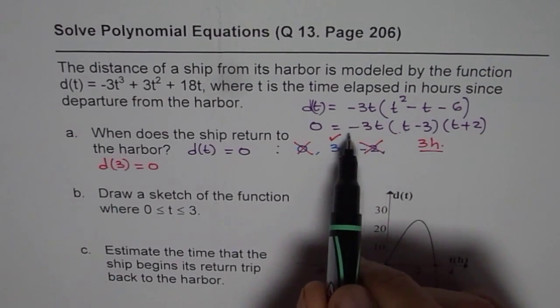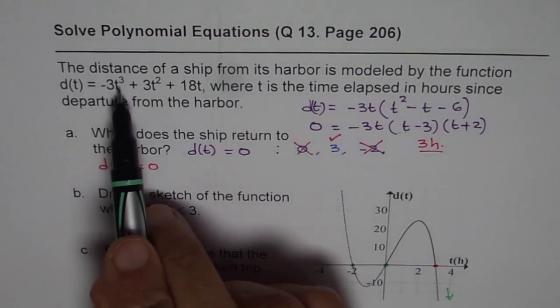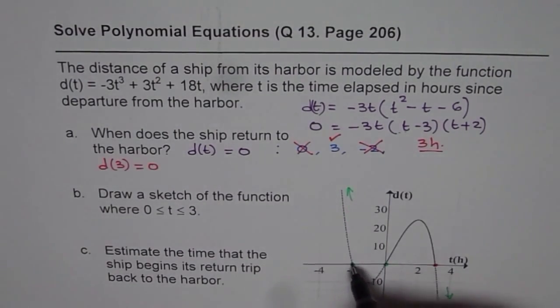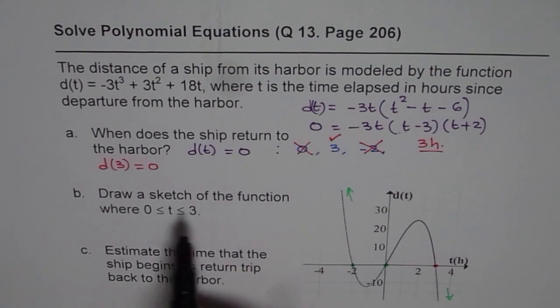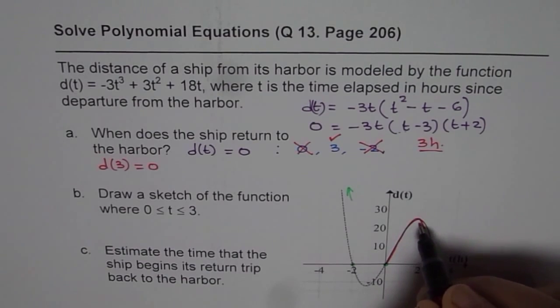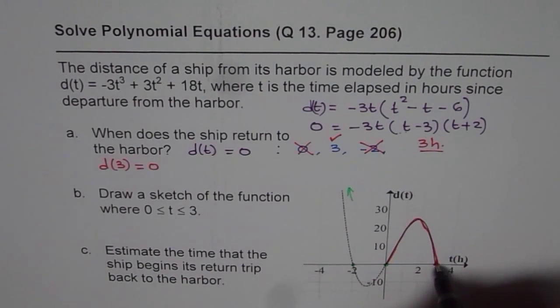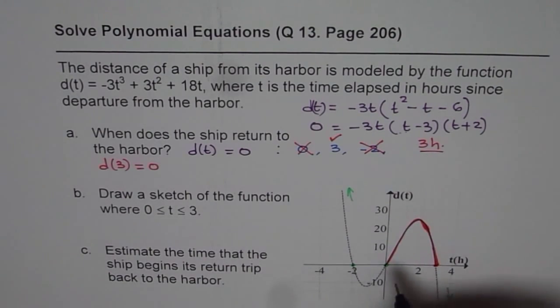The leading coefficient is negative for the function, so that means right side is down. Since the degree is 3, opposite ends. So we can just draw a cubic function going through these 3 linear zeros. We will highlight the part which goes between 0 to 3. That becomes a smooth curve between 0 to 3.